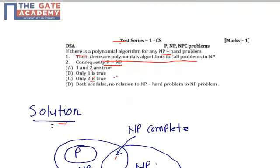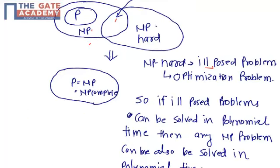If there is a polynomial algorithm for any NP-hard problem — that is, if any NP-hard problem can be solved in polynomial time, such as O(n²) or O(n³) — then this diagram can be reduced accordingly.